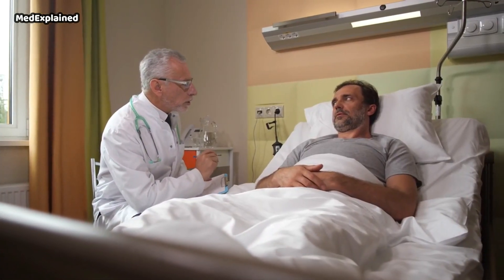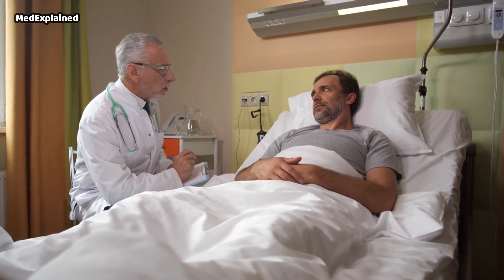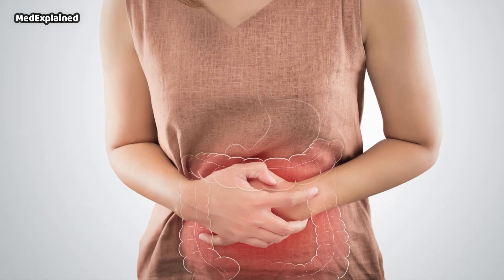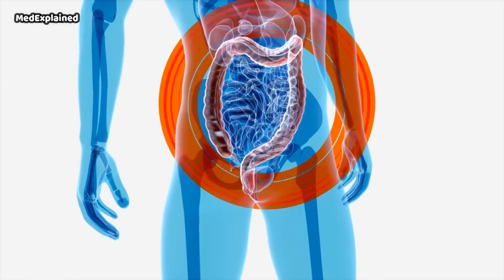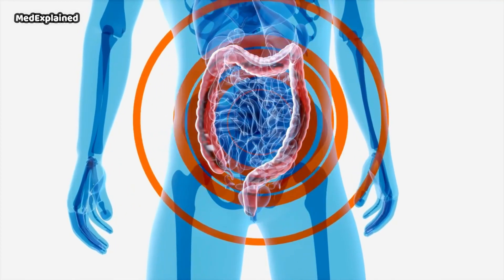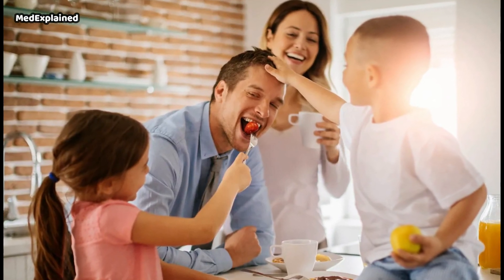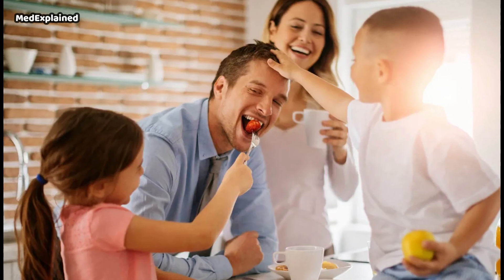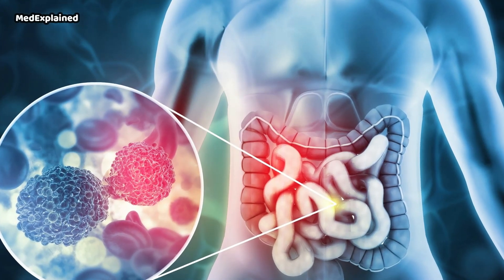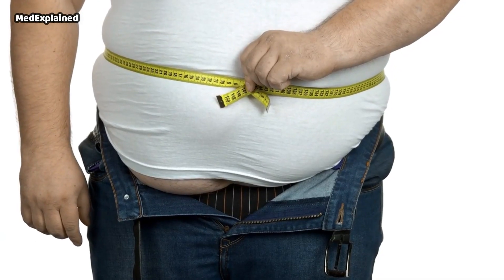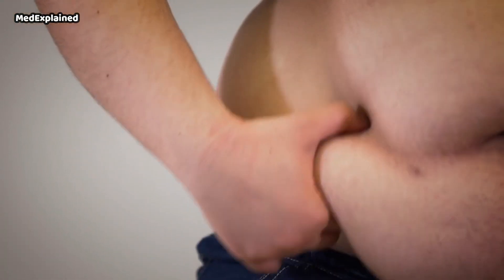A personal history of colorectal cancer or polyps increases your future risk. Chronic inflammatory diseases of the colon such as ulcerative colitis and Crohn's disease can also increase your risk. Family history matters too — you're more likely to develop colon cancer if a blood relative has had the disease, and the risk is even greater if more than one family member has been affected. People who are obese have an increased risk of colon cancer and an increased risk of dying from it.